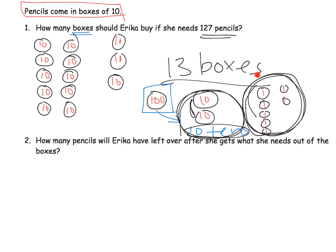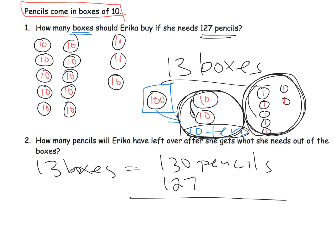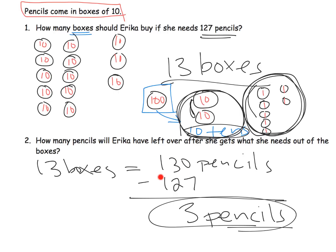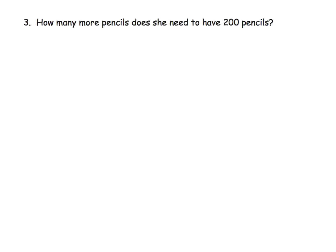The idea is to get the answer by developing some sort of strategy — don't worry about efficiency. For the second part: how many pencils will Erica have left over after she gets the 127 pencils she needs? Students need to recognize that those 13 boxes equal 130 pencils. She needed 127, so she would have 3 pencils left over. Students aren't using formalized subtraction — they'll probably use logic or count on their fingers: 27, 28, 29, 30 — and get the answer 3.